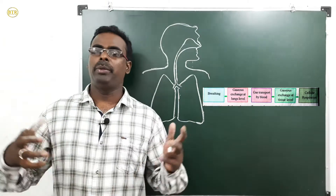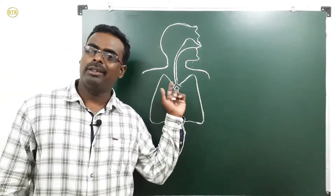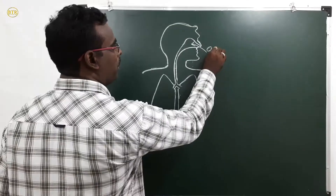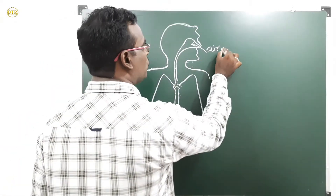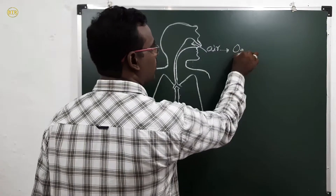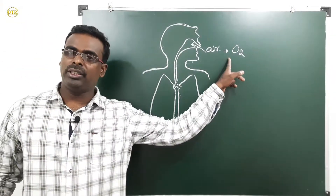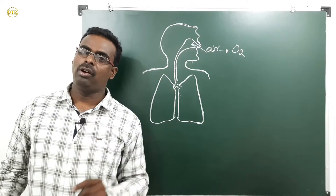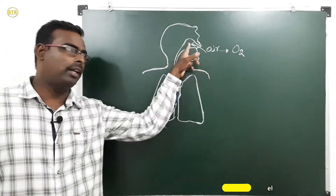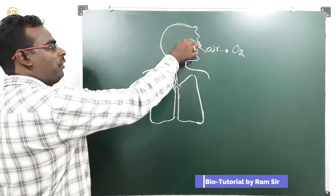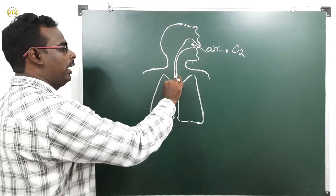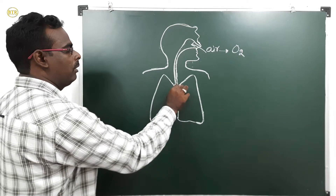I will help you understand these five steps with the help of a diagram. We take air in through the nose. In the air, a useful gas is present — that is oxygen gas, with the symbol O2. Air enters through the nose, then moves into the pharynx. This is the windpipe, also called the trachea.